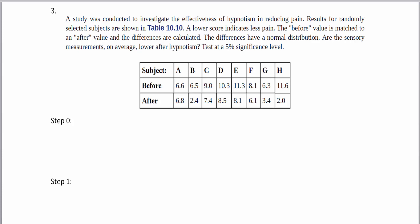Here we have a study conducted to investigate the effectiveness of hypnotism in reducing pain. There are randomly selected subjects in this table with their pain significance level before and after, and the lower score indicates less pain. The differences have a normal distribution, so we don't need to worry about an outlier check. We're going to ask: are the sensory measurements on average lower after hypnotism? When people see the word 'lower' they immediately lock on to 'less than.'